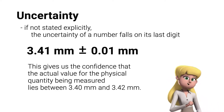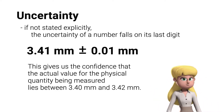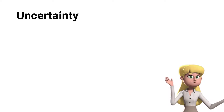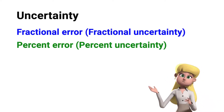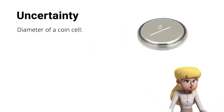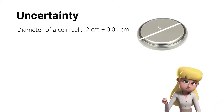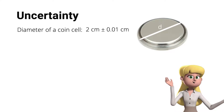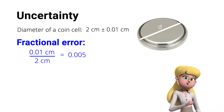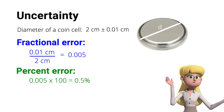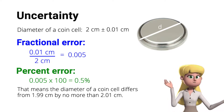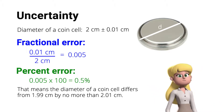This gives us the confidence that the actual value for the physical quantity being measured lies between 3.40 mm and 3.42 mm. Another way of expressing accuracy of measurement is in terms of its fractional error and percent error, also known as fractional uncertainty and percent uncertainty. For example, if the diameter of a coin cell is labeled as 2 cm ± 0.01 cm, the fractional error is 0.01 cm over 2 cm, or about 0.005. That means the diameter of a coin cell lies between 1.99 cm and 2.01 cm.